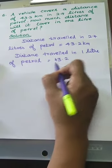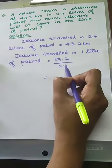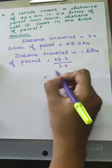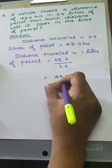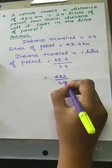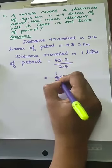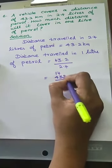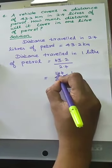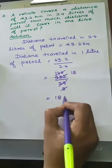43.2 divided by 2.4 — this is division of a decimal number by a decimal number. Both values have only 1 decimal place after the decimal point, so directly we take 432 by 24. We cancel using the 3 table: 3 eights are 24, so 432 divided by 24 simplifies. 8 ones are 8, balance 6; bring down to get 64; 8 eights are 64. So the answer is 18 km.